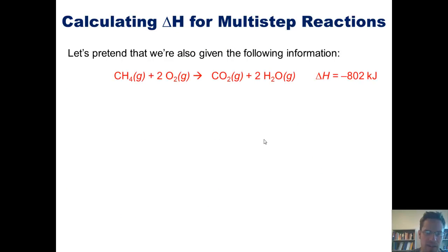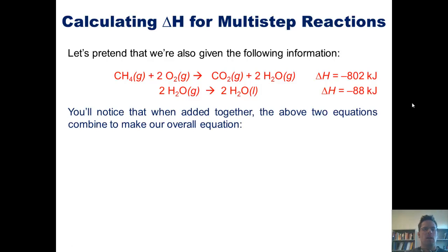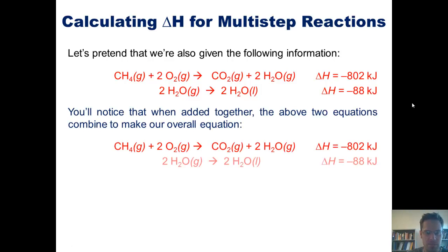So let's pretend we were also given this information. That when methane is combusted in the presence of O2 to give these products, the delta H has been measured and reported as being negative 802 kilojoules. And separately, that when we convert two molecules of O2 gas to two molecules of H2O liquid, the delta H is negative 88 kilojoules.